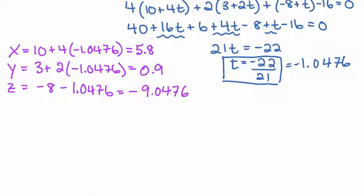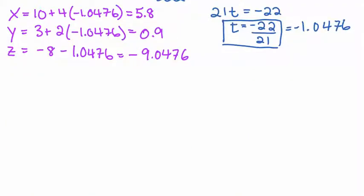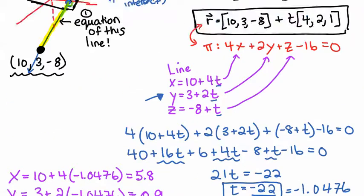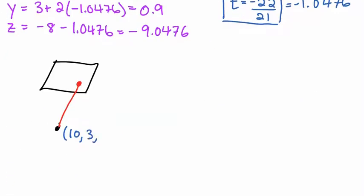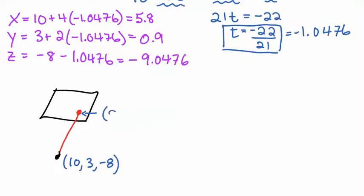So now we're trying to find, let me sum up what we've just done. So we had a plane and a point. And we're trying to find the distance from this point to this plane, the shortest distance, which is the perpendicular distance. So we know this point right here is 10, 3, negative 8. And we've just found this point, which is 5.8 something, .9 something, and negative 9.0476. So we've got now both points, and we just have to find the distance between them.